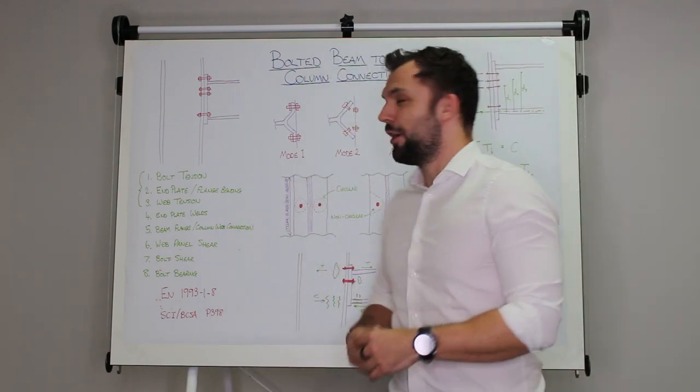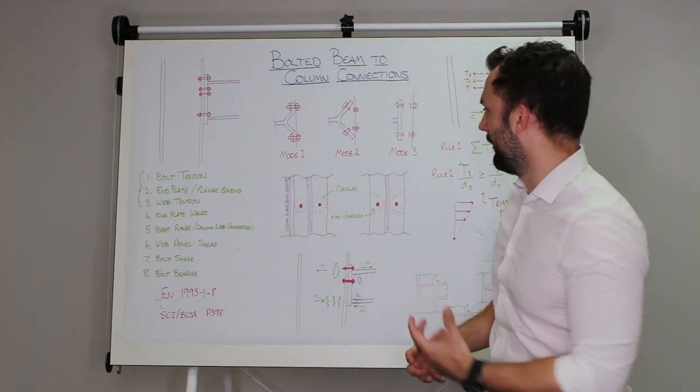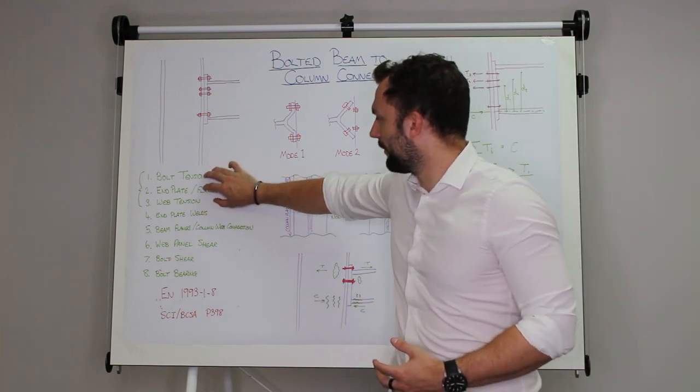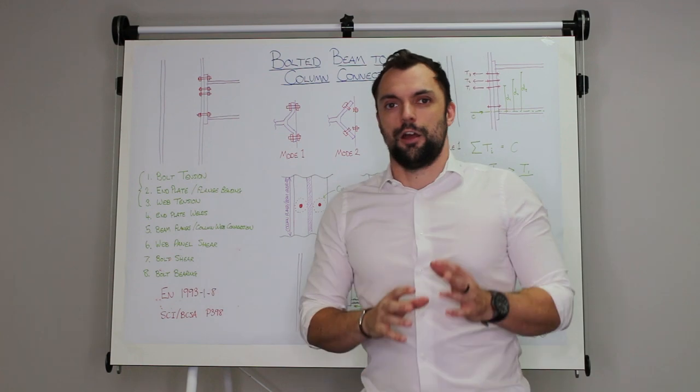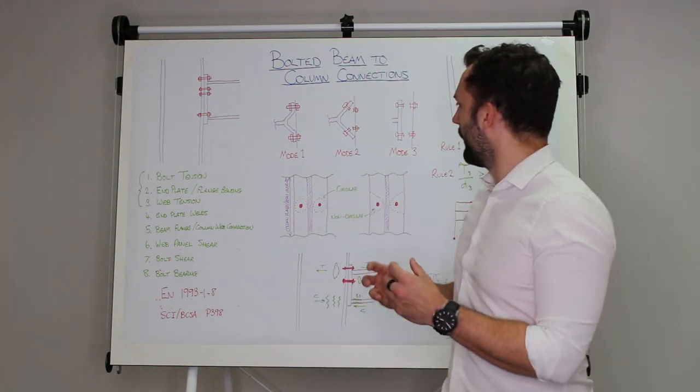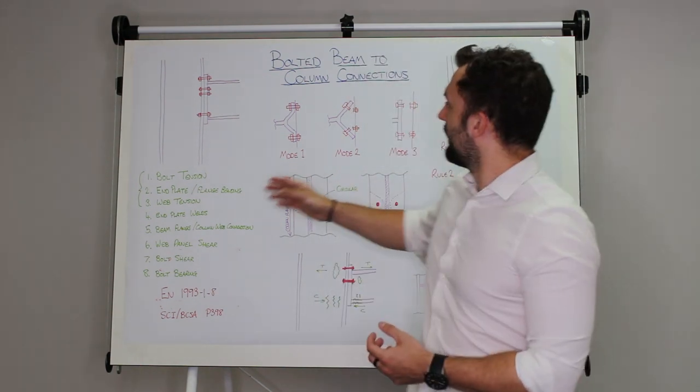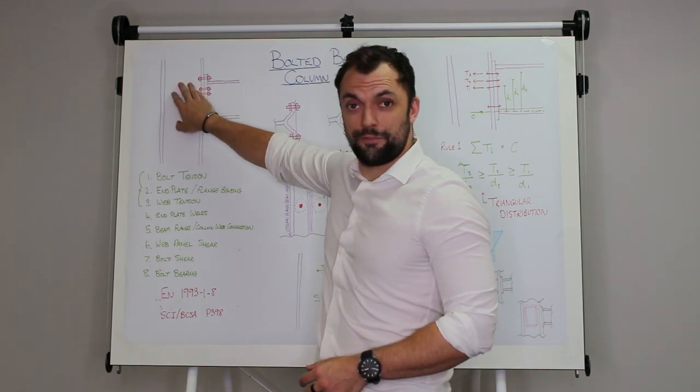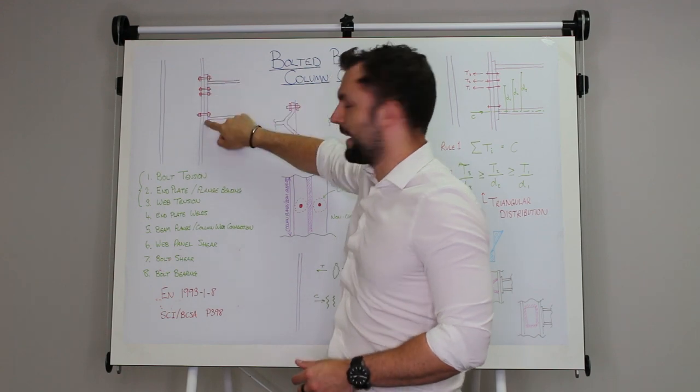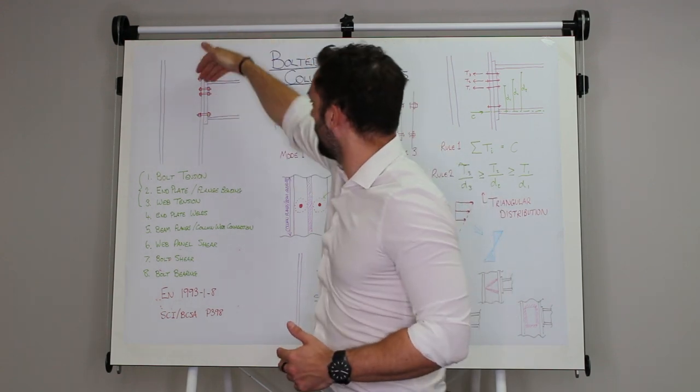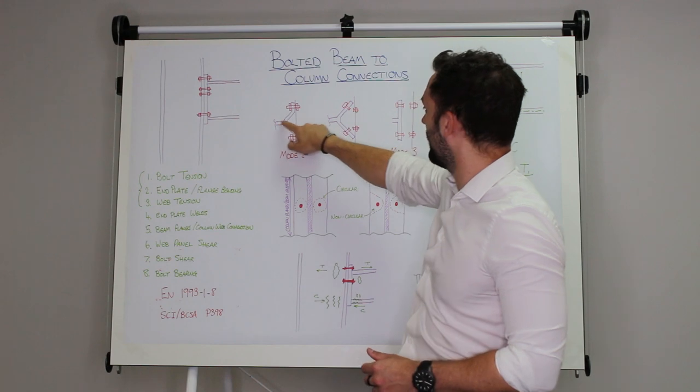So this is just going to be a high level overview of all the different things you have to consider. Coming back to bolt tension, end plate and flange bending, and web tension, the important thing here is what they call a t-stub. It's either if you imagine the web of this column and its associated flange, or this web of the beam here and the end plate that's welded to it. If you're looking plan on that what you'll see is a shape kind of like a T.